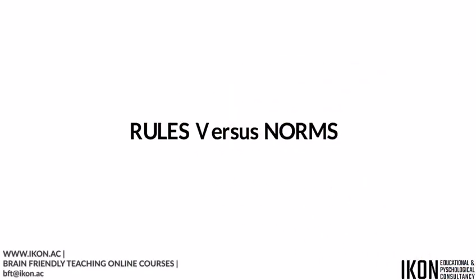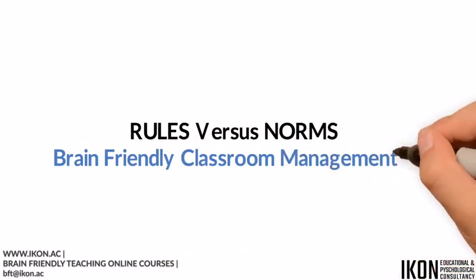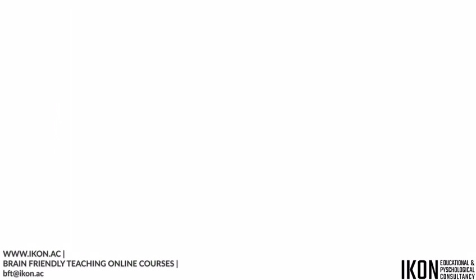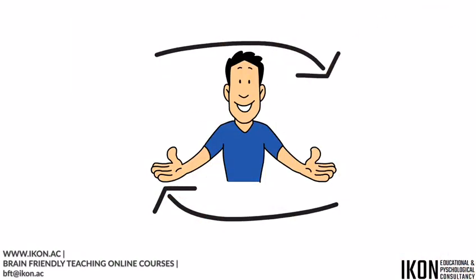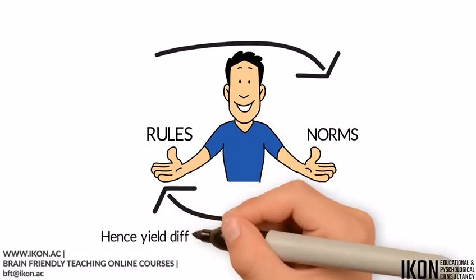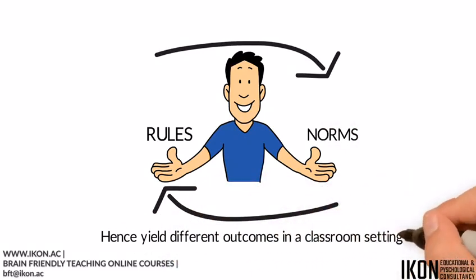Rules vs. Norms – Brain-Friendly Classroom Management. Although they are used interchangeably on many occasions, the terms rules and norms have different meanings and, hence, yield different outcomes in a classroom setting.